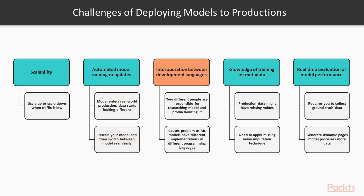After that, there is the inter-operation between development languages. Often, two different people or groups are responsible for researching the model and productionizing it, and the language for research may be different from the preferred language for production. This causes problems as machine learning models have different implementation applications in different programming languages, even though the model is essentially the same. Then, we have the knowledge of training set metadata challenge. Real world production data might have missing values, and you will need to apply a missing value imputation technique. In production systems, you don't keep information about training data, but in order to correctly impute the missing values, you have to store the knowledge of the training set statistics needed for imputation.